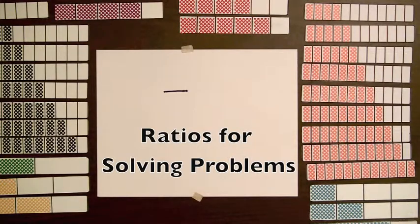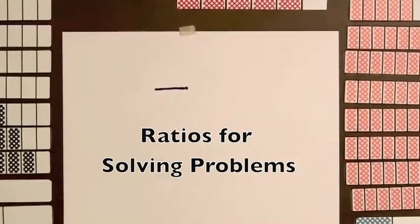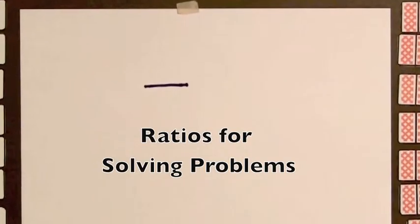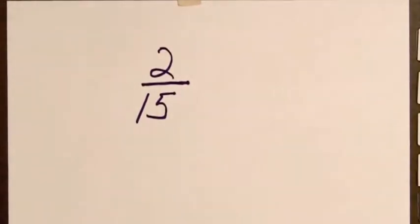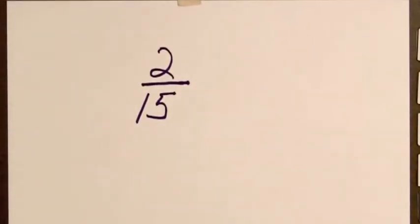Let's look at ratios for solving problems. On a school field trip the ratio of chaperones to students is 2 to 15, or two-fifteenths. If there are 75 students on the field trip, how many chaperones are there?